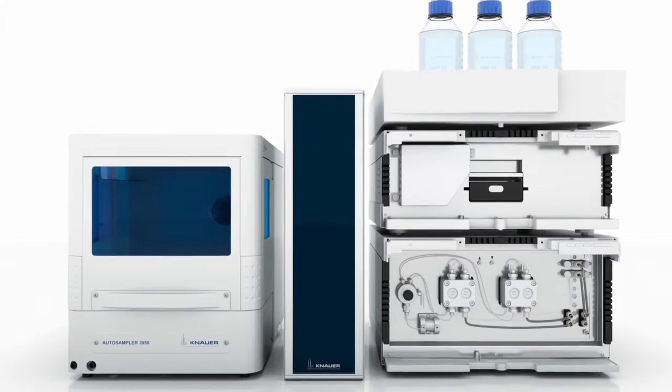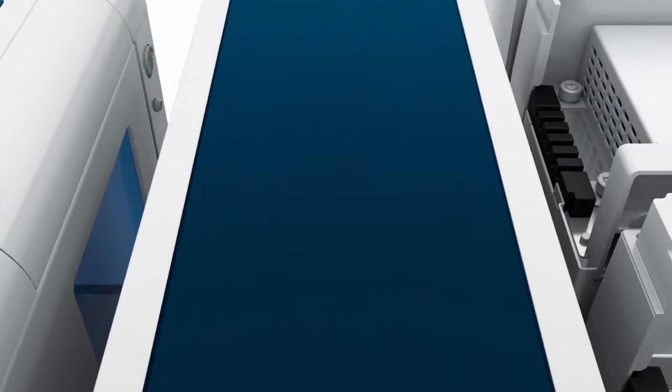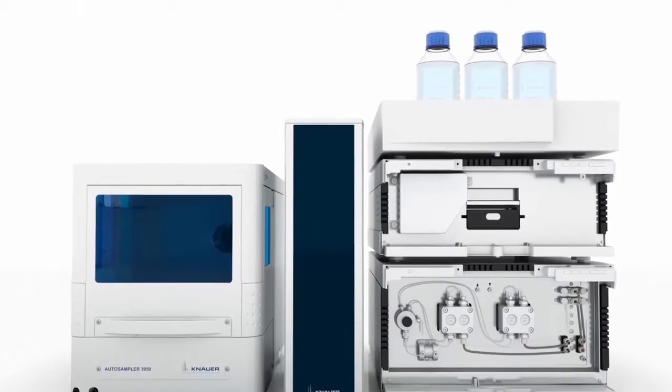To ensure a stable analysis, Knauer offers the column thermostat CT 2.1 with a temperature range from 5 to 85 degrees. It can be equipped with up to 6 columns.